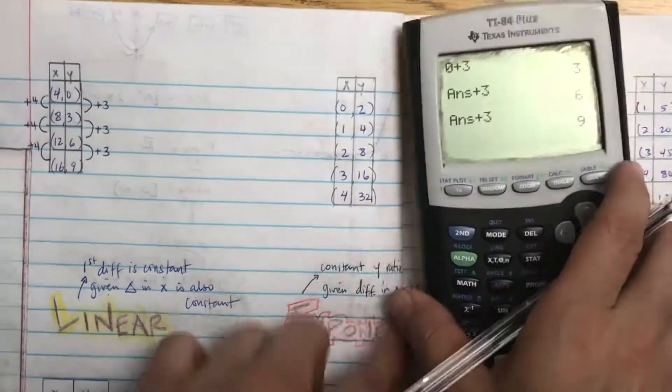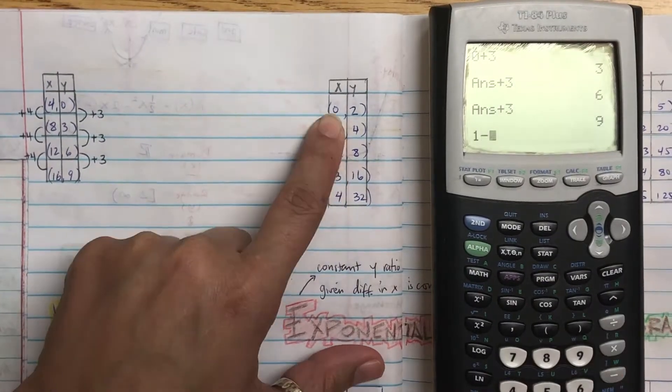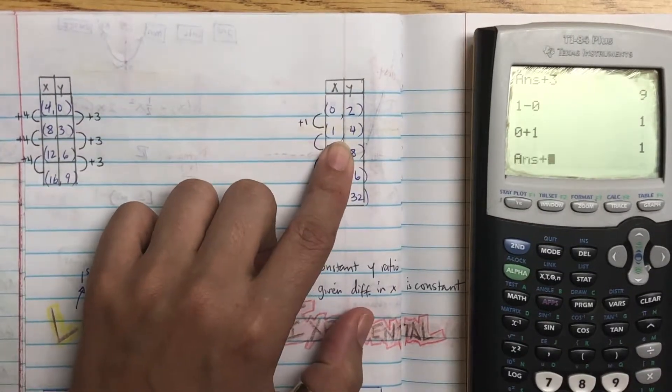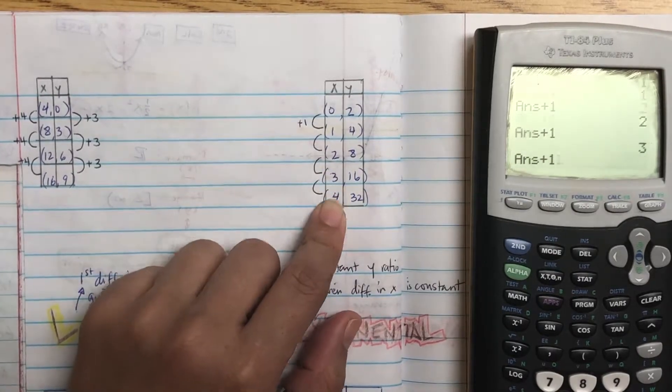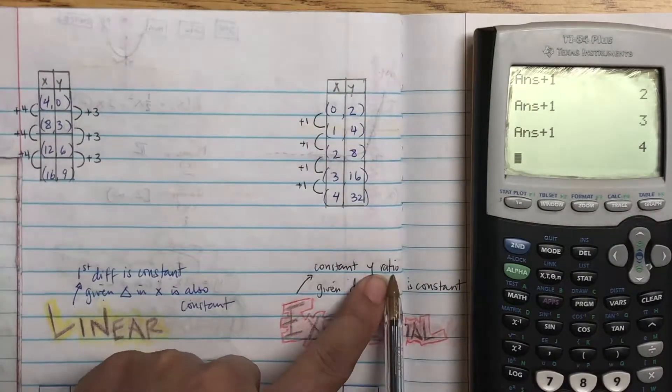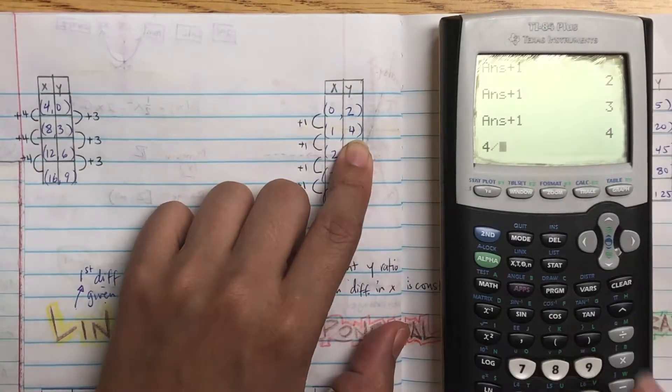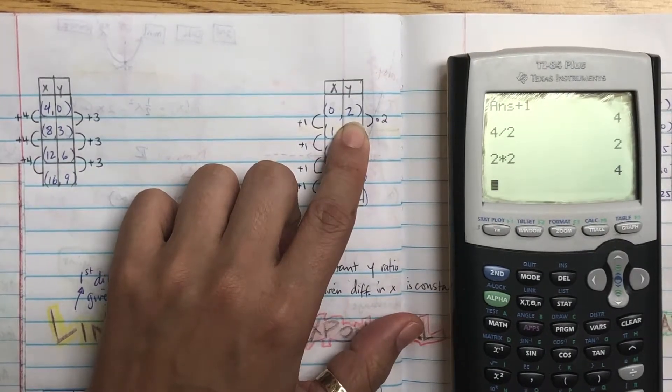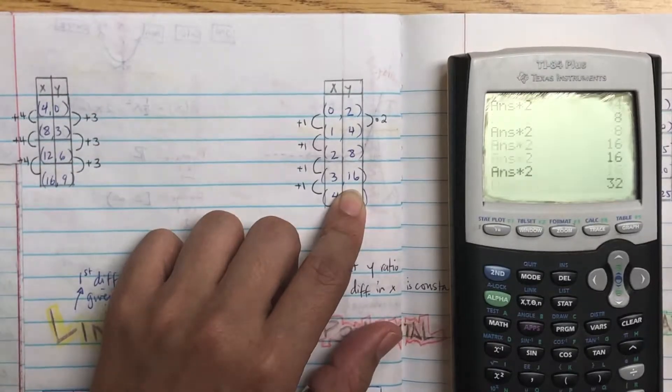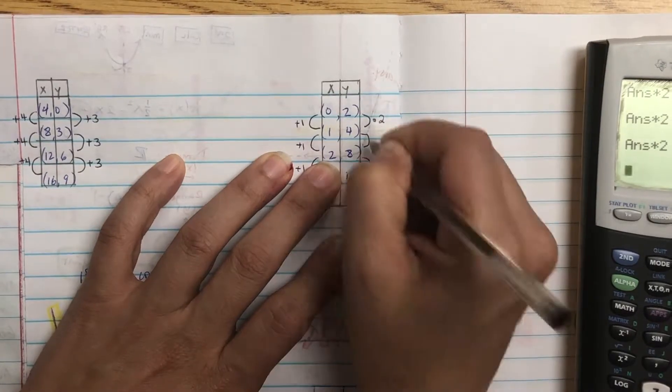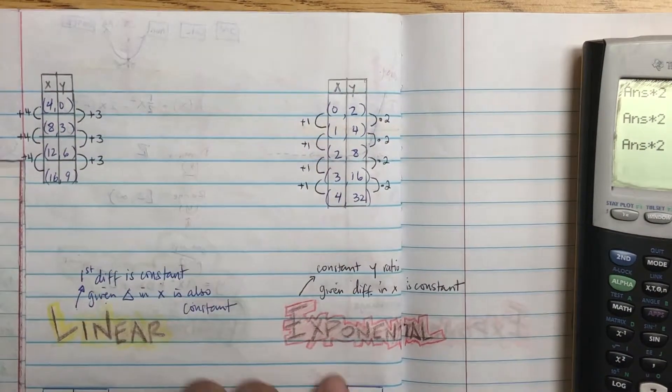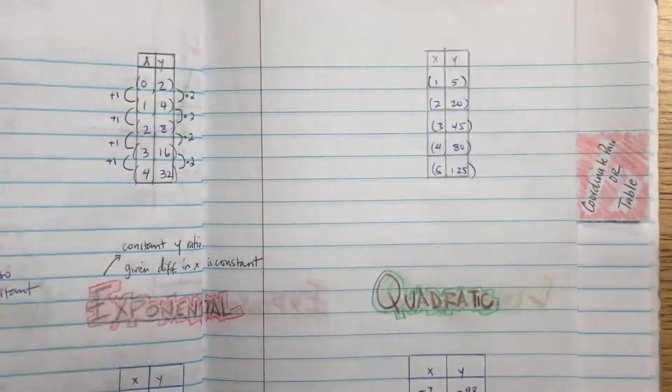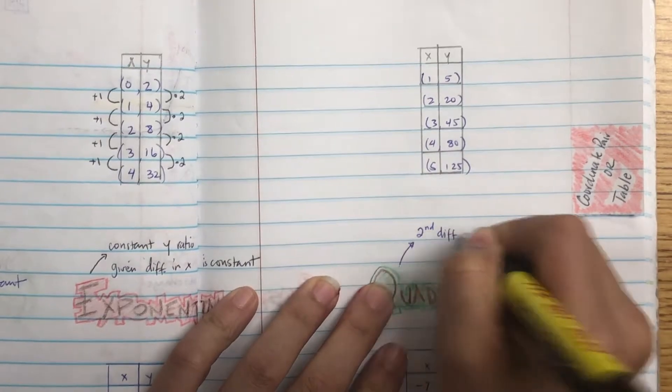For exponential, it's the constant Y ratio given that the difference in X is also constant. Same scenario. The second number minus the first number is 1, so if I add 1, do I get the next number? 0 plus 1 is 1, 1 plus 1 is 2, 2 plus 1 is 3, 3 plus 1 is 4. I'm good there. Now I can check the ratio. The ratio is division. 4 divided by 3, the second number divided by the first number is times 2. So if I multiply everything by times 2, will I get the next number? You can see I do. So all of these are multiplied by 2. That means it's exponential. If the ratio is the same, it means it's exponential.